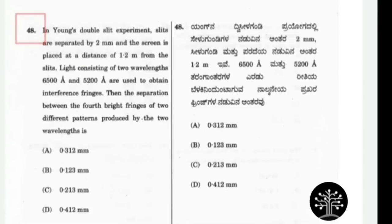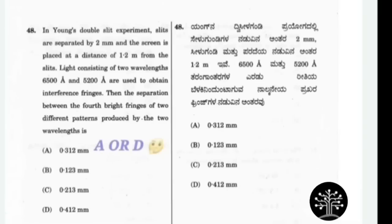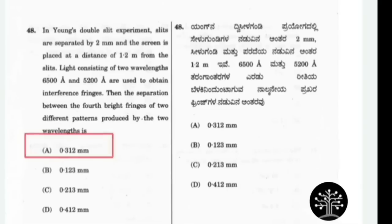The next question is about Young's Double Slit experiment. Check the similarities among options — at the end, option A has 12 and option D also has 12. So the correct option will be among A and D. Taking the help of other options, digit 3 is repeated more in other options. Option B has 3, option C has 3 — all these options support option A among A and D. Therefore option A is the correct answer.